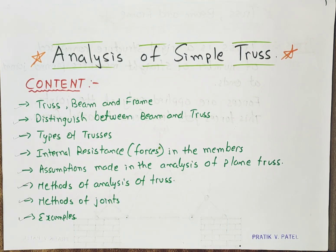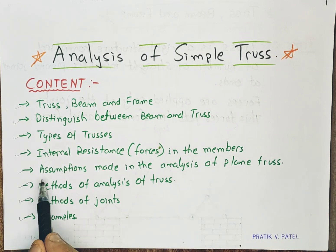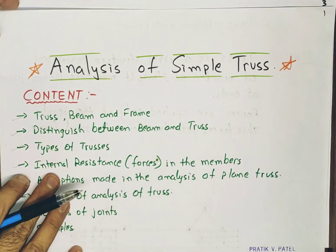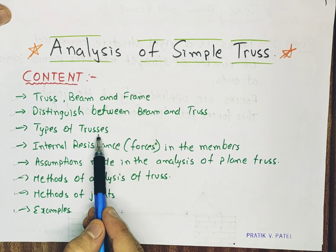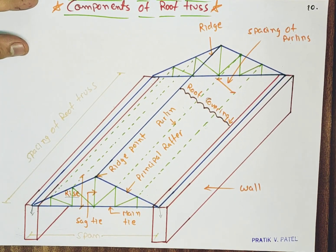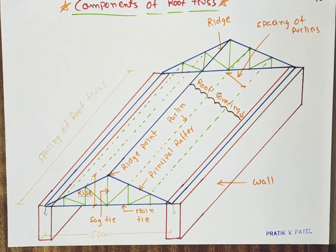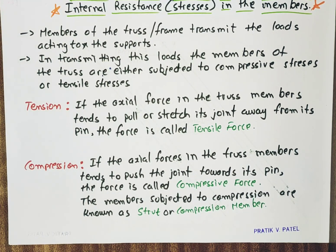Hello friends, in the fourth lecture of analysis of a simple truss, we will continue with the flow that is internal resistance in the members and assumptions made in the analysis of a plain truss. So last time what we did was distinguish between beam and truss, types of truss, and we also discussed the components of a roof truss. So as per the content we will continue with internal resistance of members, or we can say internal stresses in the members.